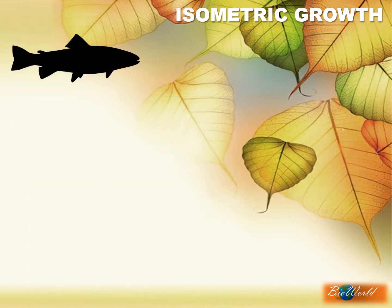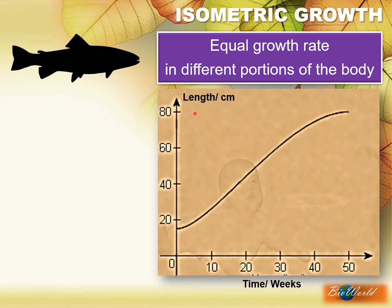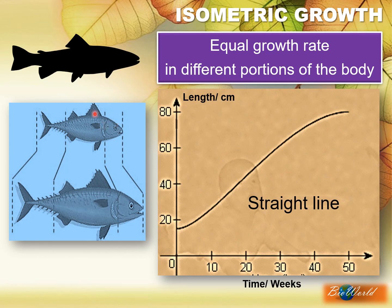The opposite of allometric growth is isometric growth, found in fish. From the word ISO, you can predict that it shows an equal growth rate of different parts of the body. So when we plot a graph of the length of the body over time, we get an almost straight line graph. To demonstrate, we can look at a picture of a fish when it was young and compare it to when it has grown into an adult. You can see that the ratio of the head, body, and tail when it was young is equal to the ratio of the head, body, and tail as an adult.